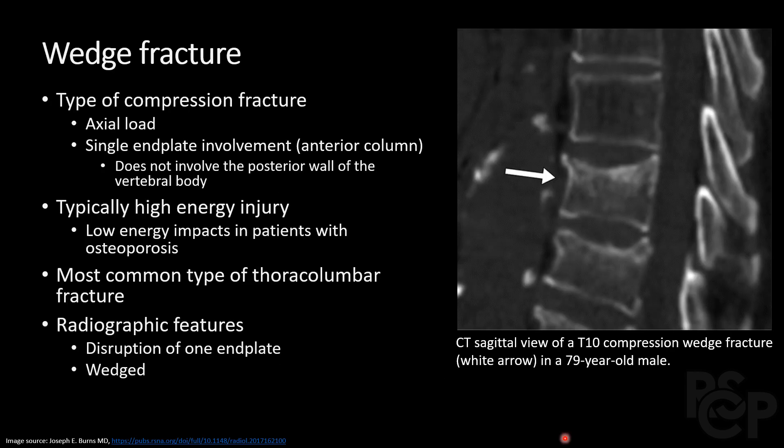Now we're going to cover the general types of fractures. These fractures may occur at any level of the spine; where applicable, I will describe the biophysics, etiology, and radiographic features. First, we have wedge fractures. These may occur in the setting of high-velocity trauma but typically occur in elderly patients with osteoporosis. Patients with osteoporosis are at high risk for compression fractures, of which wedge fractures are a subtype.